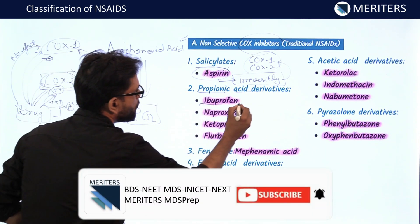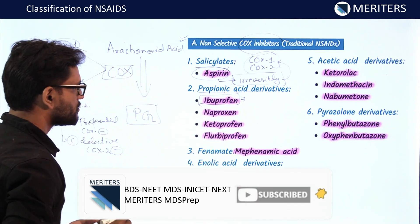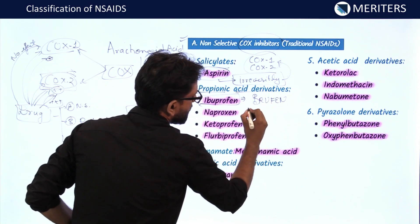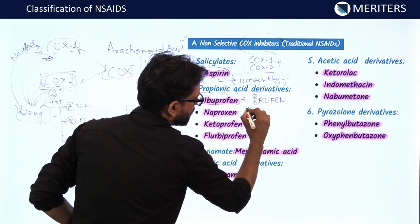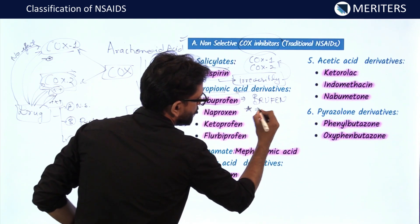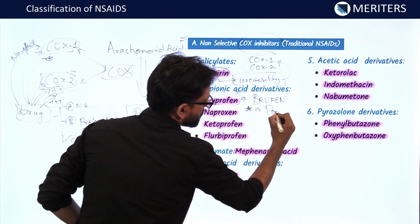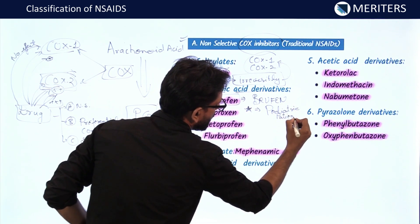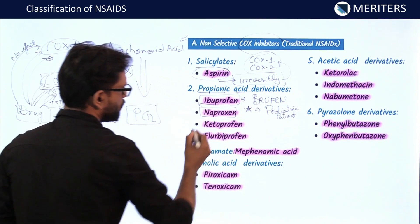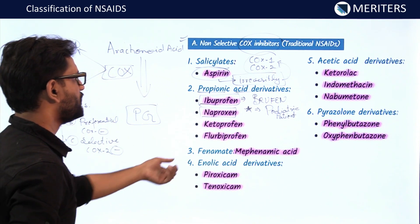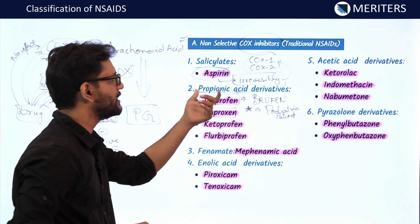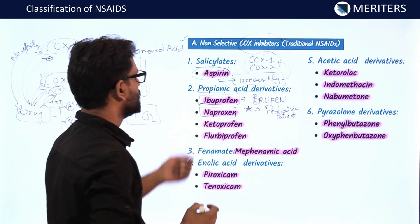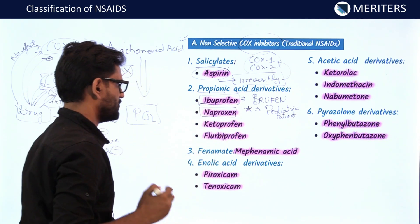The second group is the propionic acid derivatives. These contain ibuprofen — one of the most commonly used drugs, sold under the brand name Brufen. It has been cleared by medical organizations for use in pediatric patients and is a very good anti-inflammatory drug. We also have naproxen, ketoprofen, and flurbiprofen in this category, all having a propionic acid group in their chemical structure.